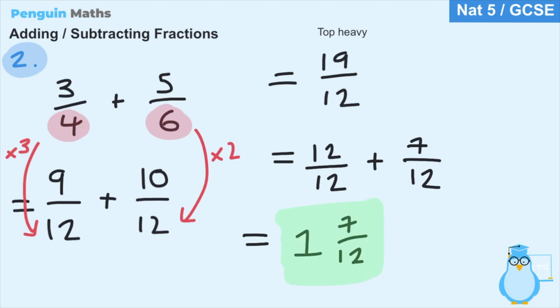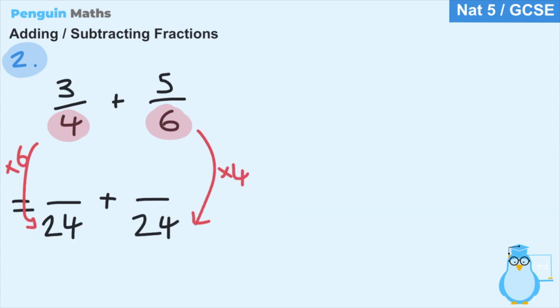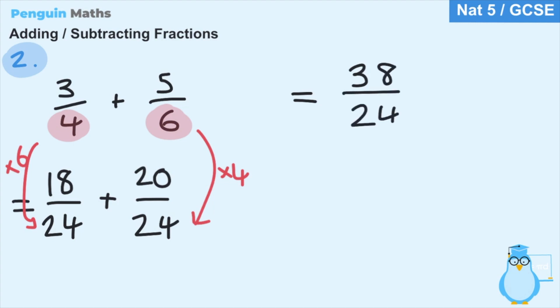To show what happens if we use 24 as the bottom number: for the first fraction, four times six is 24, so three times six is 18. For the second fraction, six times four is 24, so five times four is 20. Then 18 plus 20 equals 38 over 24. We can simplify by dividing top and bottom by two: 38 divided by two is 19, and 24 divided by two is 12 — giving us 19 twelfths, the exact same answer. So either common denominator works.